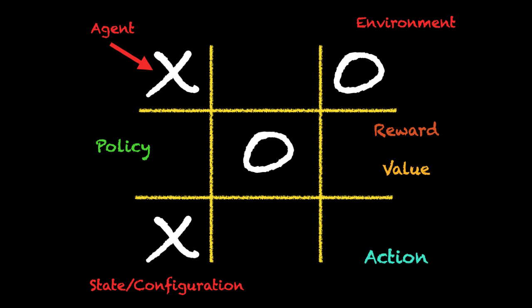The policy is essentially based on two things: one is the reward which it gets from the environment, and one is the value. Reward and value are related to each other, but the reward is used for the last step of the game — whether you win, lose, or draw. Value is the intrinsic value of each state or configuration, meaning the higher the value of a configuration, the more likely it is to lead you to a win. So reward is for the final stage (positive or negative), and value is the intrinsic worth of each intermediate state leading toward a win or a loss.